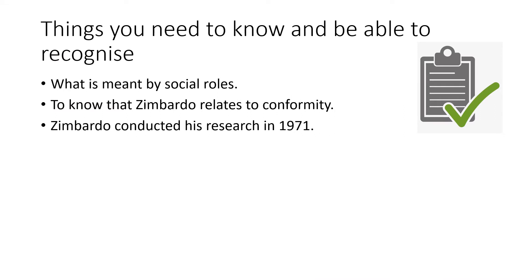I've put together my normal slide of things you need to know and be able to recognise. Something a lot of students don't really think about when they think of Zimbardo's study is social roles, and the specification does mention that you need to know what social roles are. You also need to know that Zimbardo relates to conformity — sometimes students mix this up with obedience — and Zimbardo conducted his research in 1971.